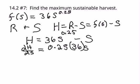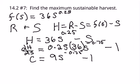When we simplify this, we get 9s to the negative 0.75 minus 1. And remember, we want to set this equal to 0, and this will give us our critical values that we need to see if that's our maximum.